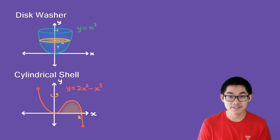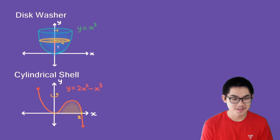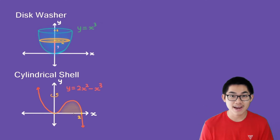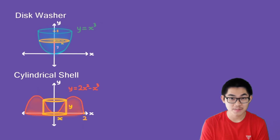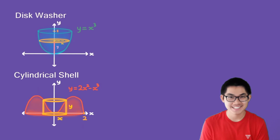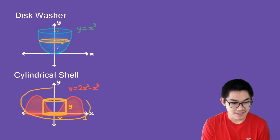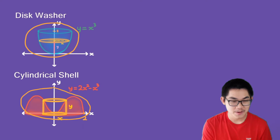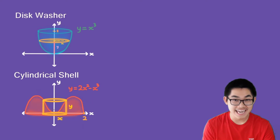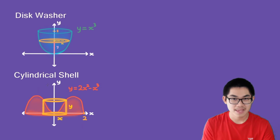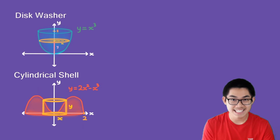Now let's look at the cylindrical shell method. We have the function y = 2x² − x³, and we take the area between this function and the x-axis, then rotate it around the y-axis. If you try the disk/washer method here, you'll find it's impossible. The trick is: if the shape does not look like a cucumber cut in half — in this case it looks like a mountain with a dent inside — you must use the cylindrical shell method.